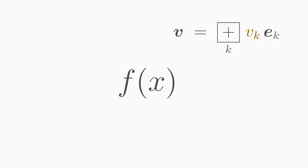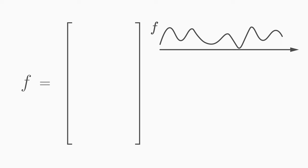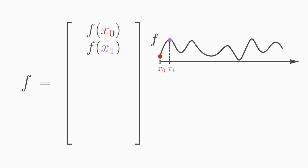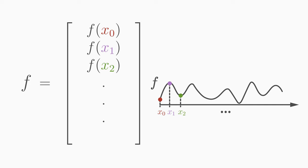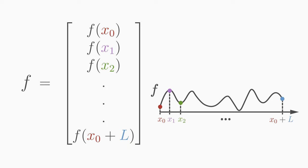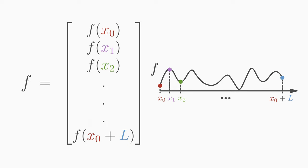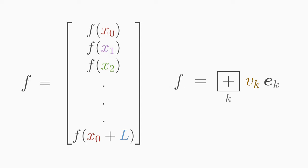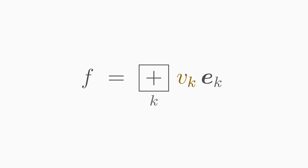We can also apply this concept of linear combination to infinite-dimensional vectors. A function f can be interpreted as such an infinite-dimensional vector, which we can then represent as a linear combination. We interpret the function values f(x0), f(x1), f(x2), and so on, as components of f. The argument x is a real number and theoretically there are infinitely many values — for example between x0 and x1 — but this is still a good way to think of a function as a vector with infinitely many components.